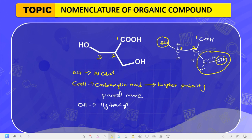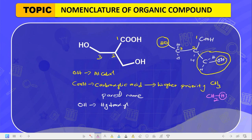This substituent is called hydroxymethyl. It is called hydroxymethyl because it has the OH of the hydroxy group attached to a methyl. Methyl is normally CH3, but one of the hydrogens here has been replaced with OH, giving CH2OH — so you call it hydroxymethyl. This whole group here is called hydroxymethyl.